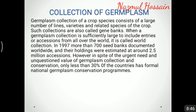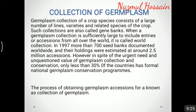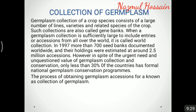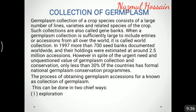A germplasm collection of a crop species consists of a large number of lines, varieties, landraces, and related species of the crop; such collections are also called gene banks. There are more than 700 seed banks documented worldwide, and their holdings were estimated at 2.5 million accessions. However, in spite of the urgent need and unquestioned value of germplasm collection and conservation, only about 30% of countries have formal national germplasm conservation programs. The process of obtaining germplasm accessions is known as collection of germplasm, which can be done by exploration or by procurement from other agencies.